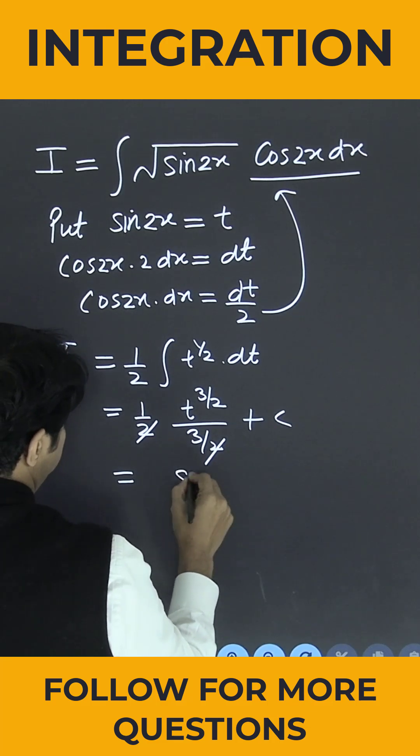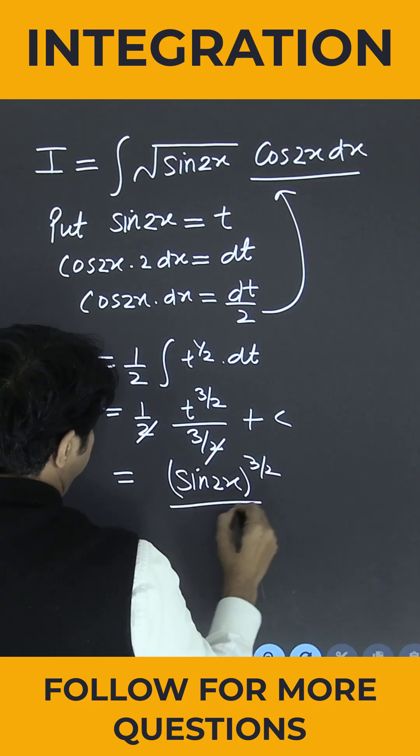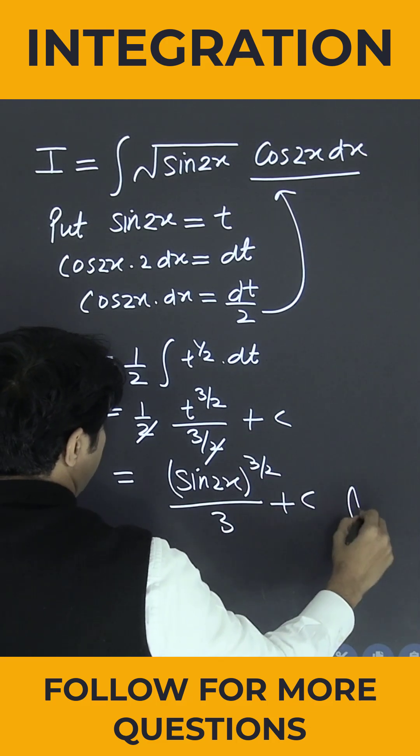So what is the value of small t? This is sin 2x to the power 3 by 2 divided by 3 plus c is the answer.